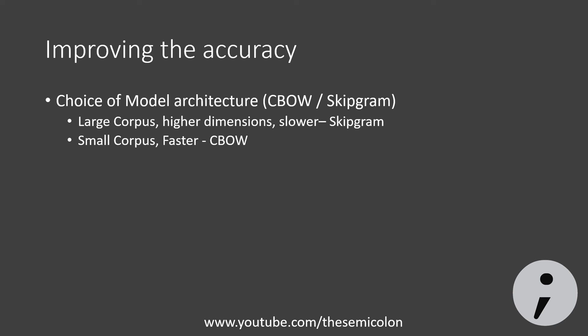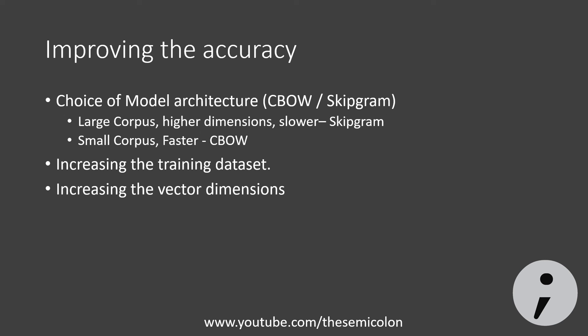There are a few other things to tweak to improve accuracy, like adding more data, which is fairly obvious. We can also increase the dimensions of the word vector so that more information is preserved. Increasing the window size also helps but makes training a little more difficult. So this is all about word2vec and word embeddings. In the next video, we'll look at how we can implement this in Python. Thank you.